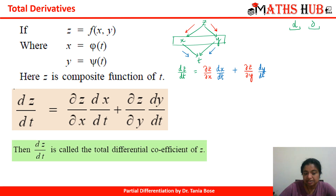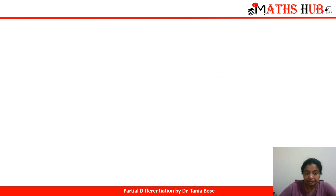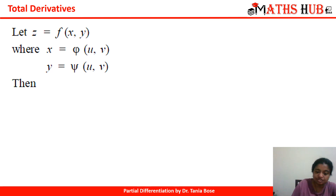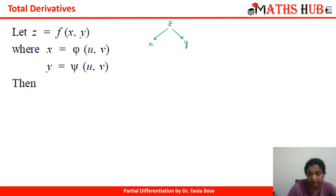From this we get the value of dz/dt, which is called the total differential coefficient of z. I hope this concept is clear. Now let's move on to the next case, where we draw the tree diagram for a function of two independent variables.